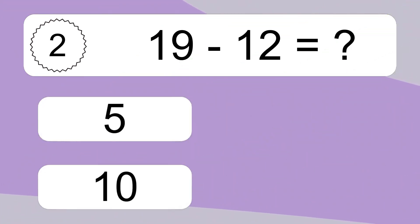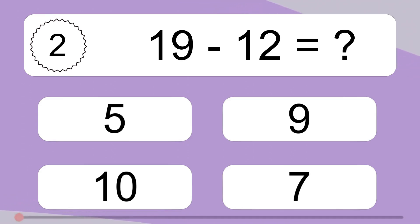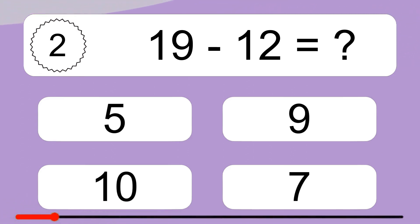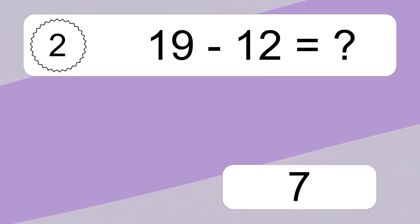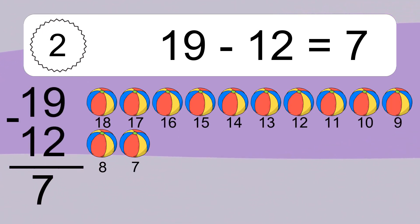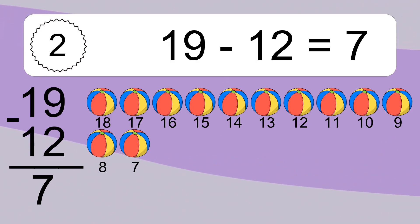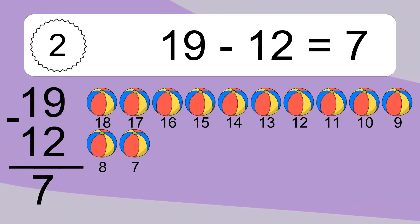19 minus 12 equals what? 19 minus 12 equals 7. Let's count it: 18, 17, 16, 15, 14, 13, 12, 11, 10, 9, 8, 7.